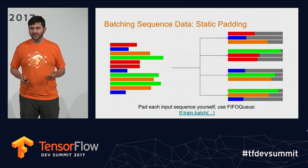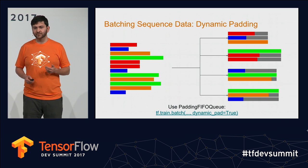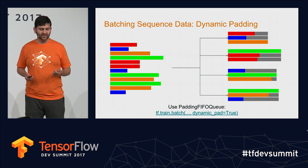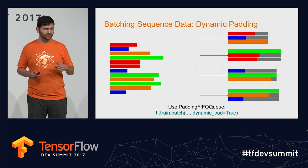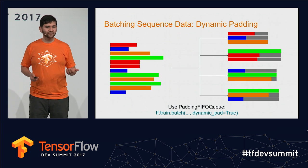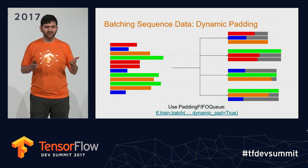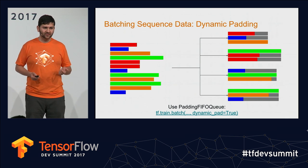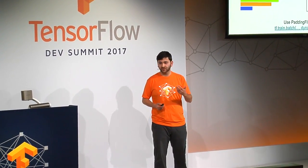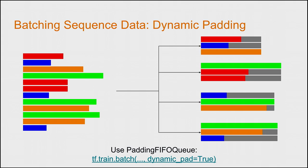Can we do better? The next best thing is to let the batching mechanism perform the padding for you. You feed variable-length sequences into a special padding queue. When it reads off a mini-batch, it finds the longest sequence and pads all others up to that maximum length. You don't need to know the maximum length, and you're only padding up to the longest sequence in that batch. However, as batch sizes become larger — 32, 64, 128 — you're increasingly likely to have at least one long sequence in every mini-batch, taking you back to wasting space and computation time.